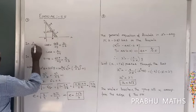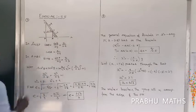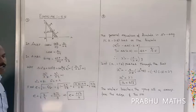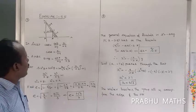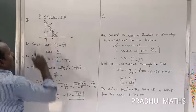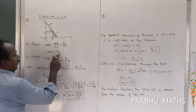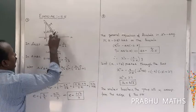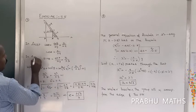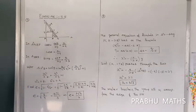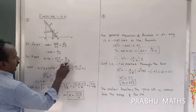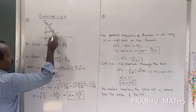In triangle CEP: cos theta equals adjacent over hypotenuse, which gives cos theta equals x1 divided by 0.9. In triangle PD: sin theta equals opposite over hypotenuse, which gives sin theta equals y1 divided by 0.3.